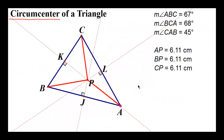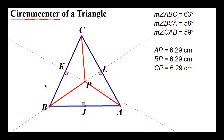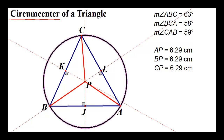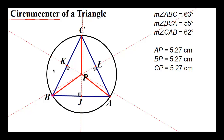The reason it's called a circumcenter — just like the angle bisectors gave us the incenter — is that these red lines are radii of a circle. If I draw the circle that passes through point A, point C, and point B, it goes around the outside of the triangle. The circle is circumscribed around the triangle. 'Circum-' means to go around, like 'circumnavigate,' and the circumcenter is the center of that circle around the triangle.